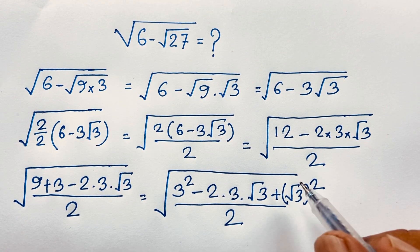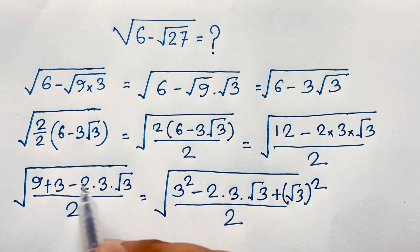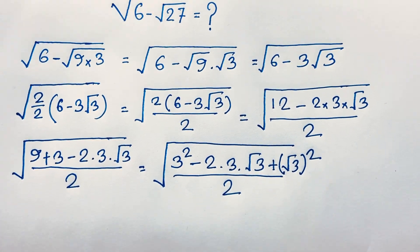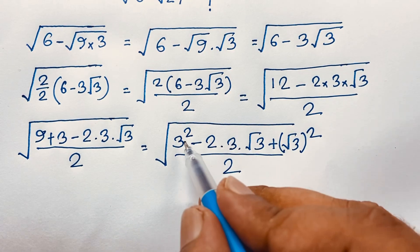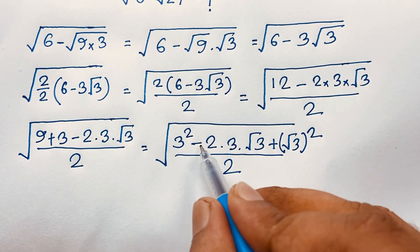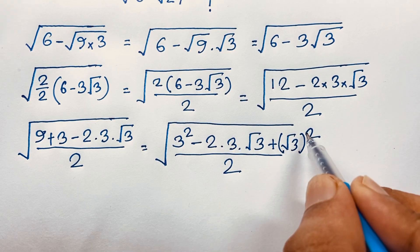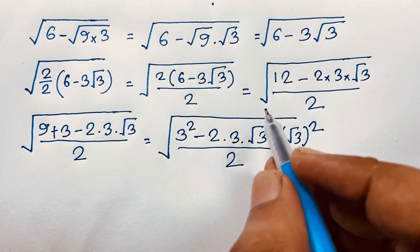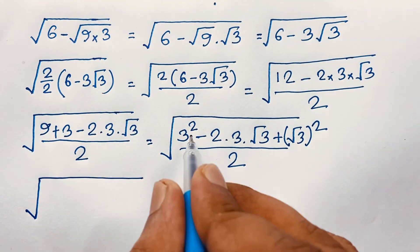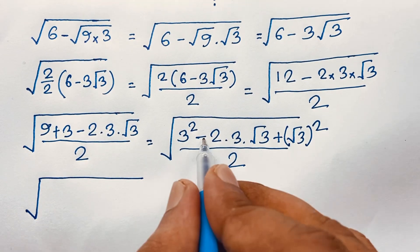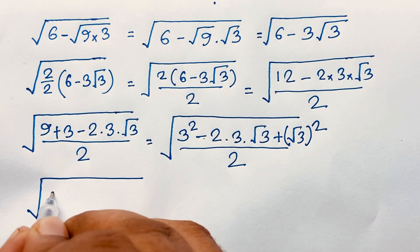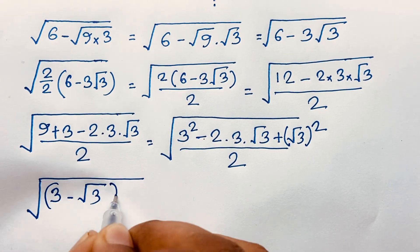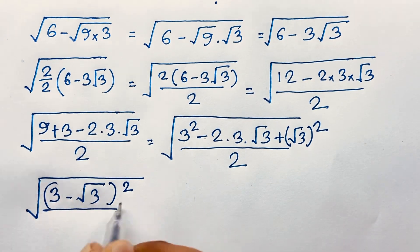Now the pattern becomes clear: the square root of 3 squared is 9, and we have 2ab. Thinking of a equals 3 and b equals square root of 3, we recognize the identity a squared minus 2ab plus b squared equals (a minus b) squared. So the expression under the square root becomes (3 minus square root of 3) squared, all over 2.